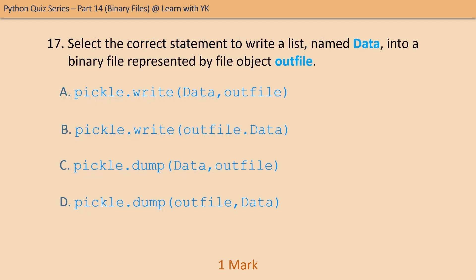Question number seventeen: select the correct statement to write a list named data into a binary file represented by the file object out_file. The correct statement is as given in option C.